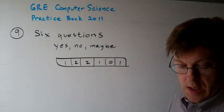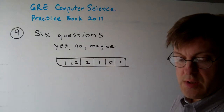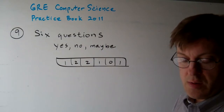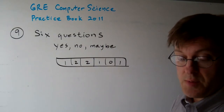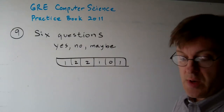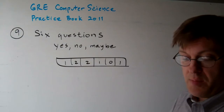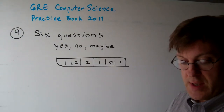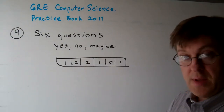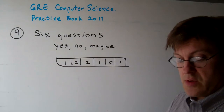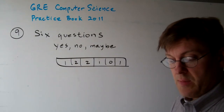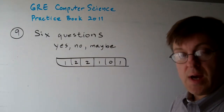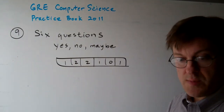Question 9. A researcher is preparing a questionnaire with 6 questions. The only possible responses to each question are yes, maybe, and no. The researcher wants to know how many people will answer with any given combination of responses.